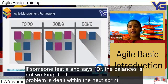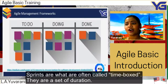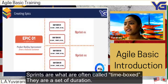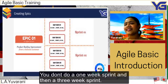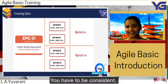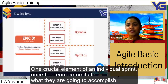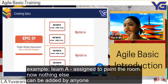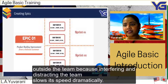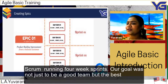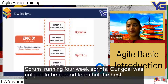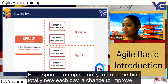Sprints are called time boxes — they have a set duration, and you must be consistent. You don't do a one-week sprint and then a three-week sprint. One crucial element: once the team commits to what they will accomplish that week, the tasks are locked in. Nothing can be added by anyone outside the team, because interfering and distracting the team dramatically slows its speed. Our goal was not just to be a good team but the best. Each sprint is an opportunity to do something totally new; each day is a chance to improve.